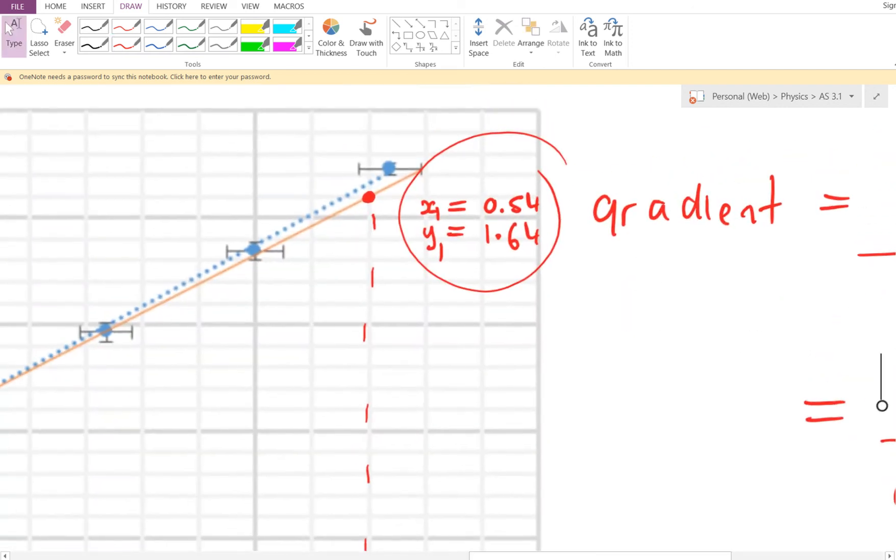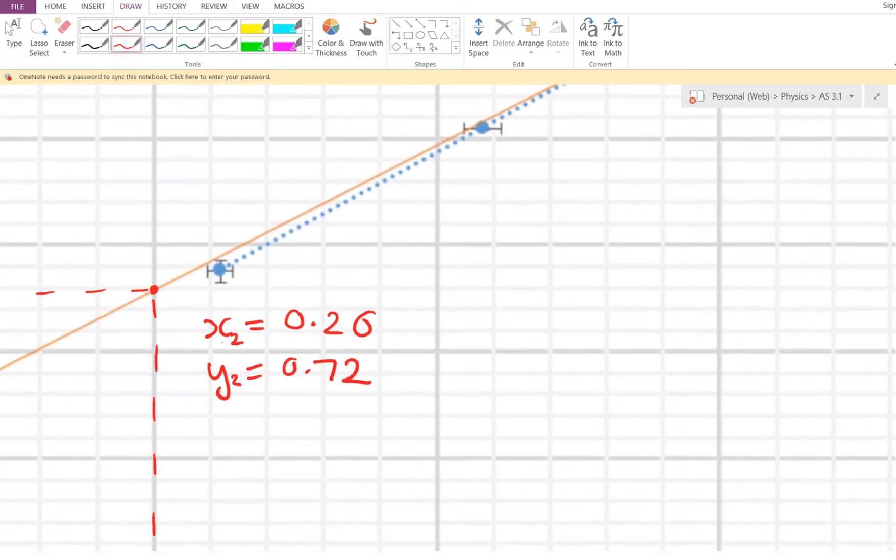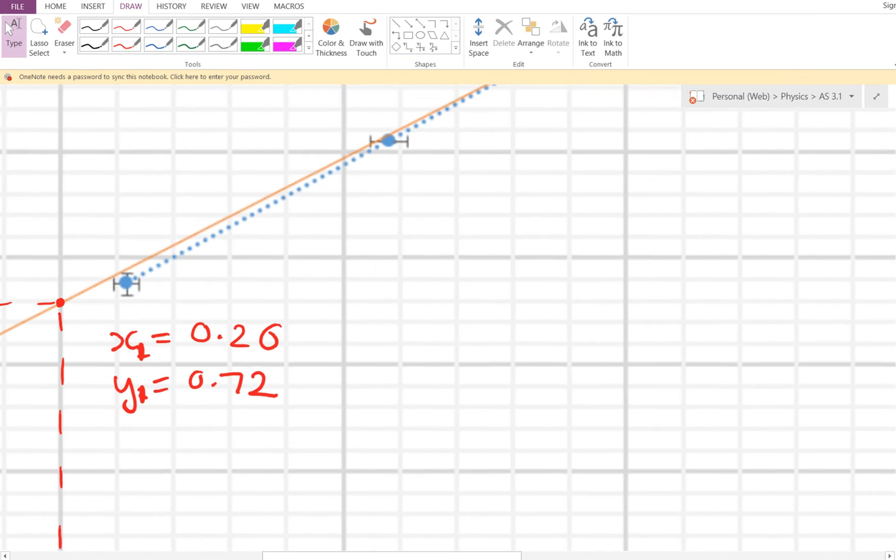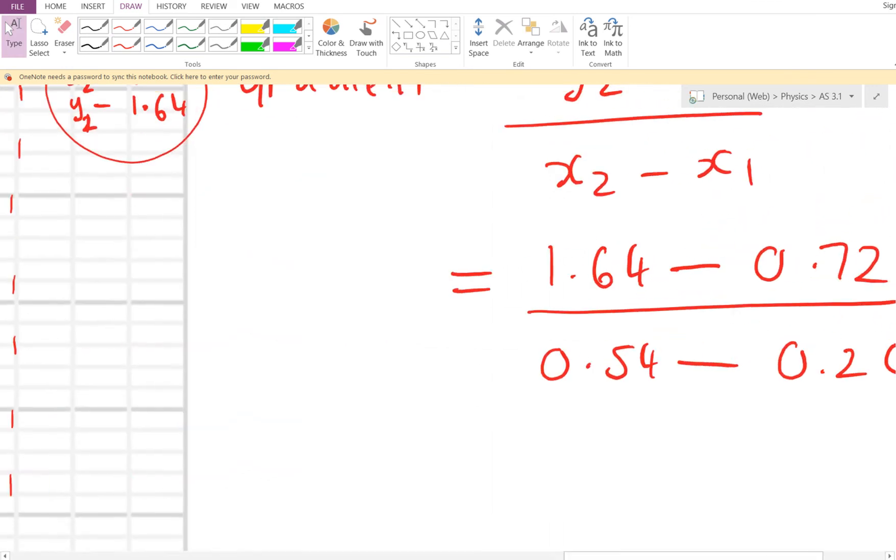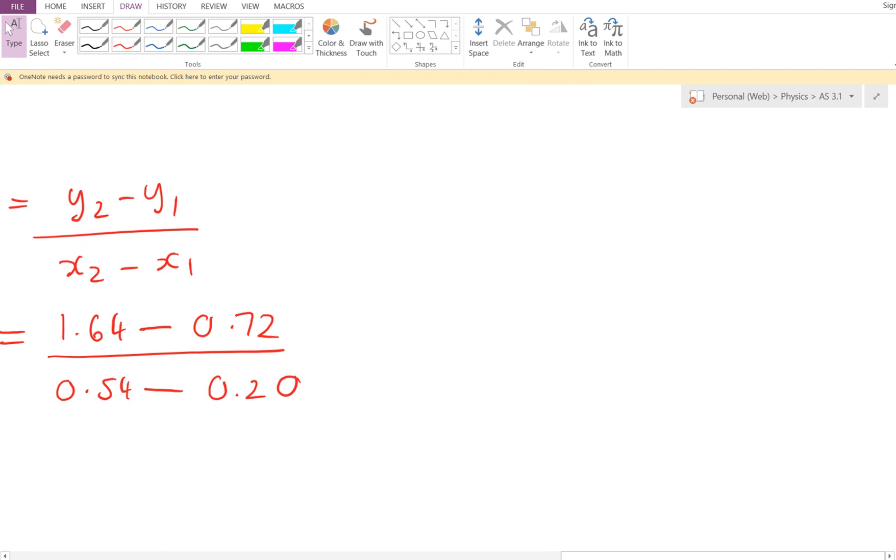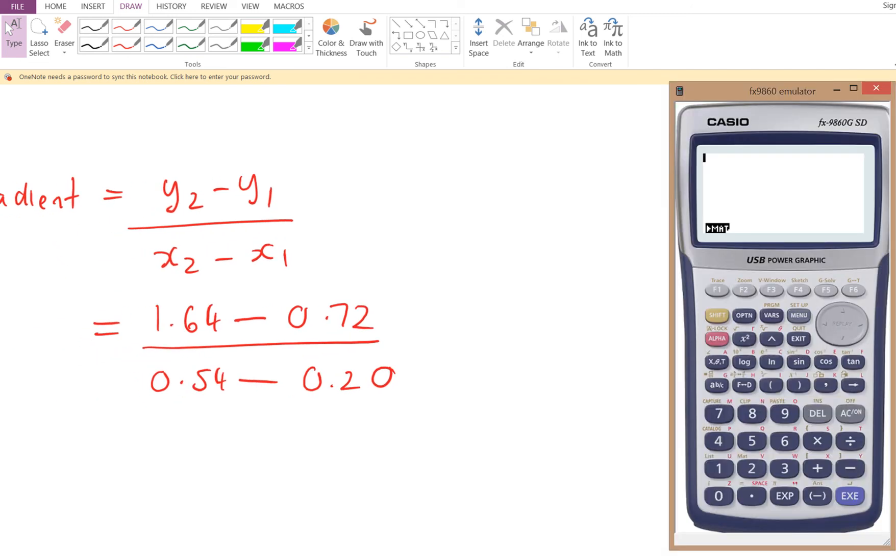So coming back over here to our working, we can now put that in the calculator and figure out what the story is there. So we're going to have here 1.64 minus 0.72, and we're going to divide that by 0.54 minus 0.2. So we've got here a gradient of 2.705, 2.7 to 3 sig figs, 2.71.